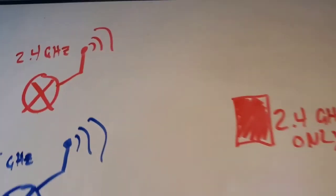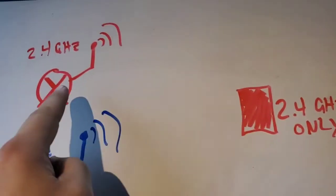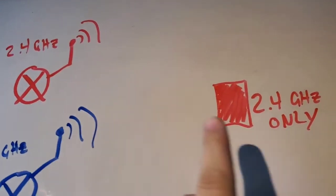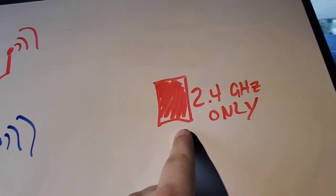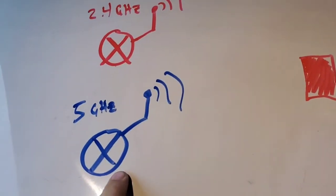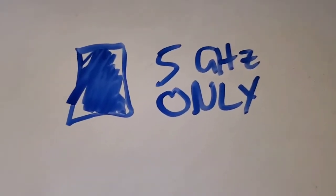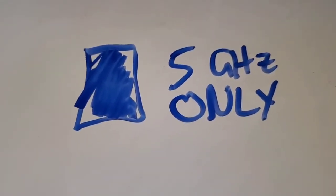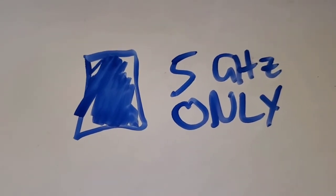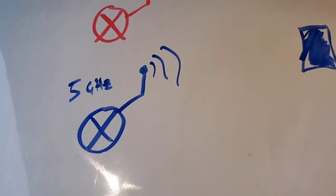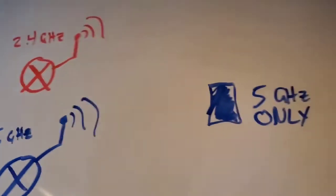If your smartphone only supports 2.4 gigahertz and your router is only sending a signal at 2.4 gigahertz, then they can communicate. However, a 2.4 gigahertz phone cannot communicate with a 5 gigahertz router. Similarly, a smartphone programmed to recognize 5 gigahertz frequencies only will be able to communicate only with routers that broadcast at 5 gigahertz.